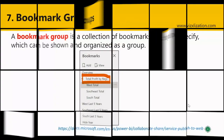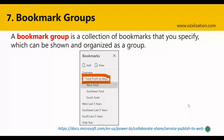A bookmark group is a collection of bookmarks that you specify, which can be shown and organized as a group. You can organize different bookmarks into just one group. In this example, there is a group called Total Profit by Region containing three bookmarks.